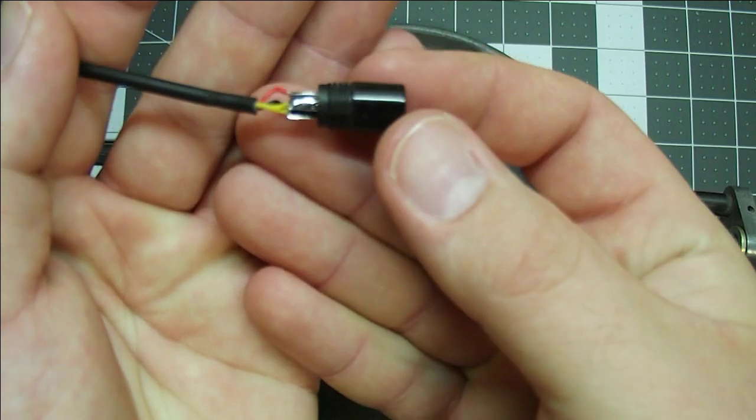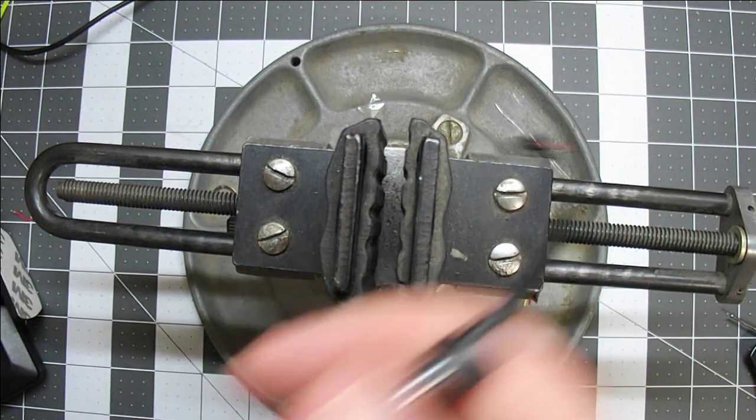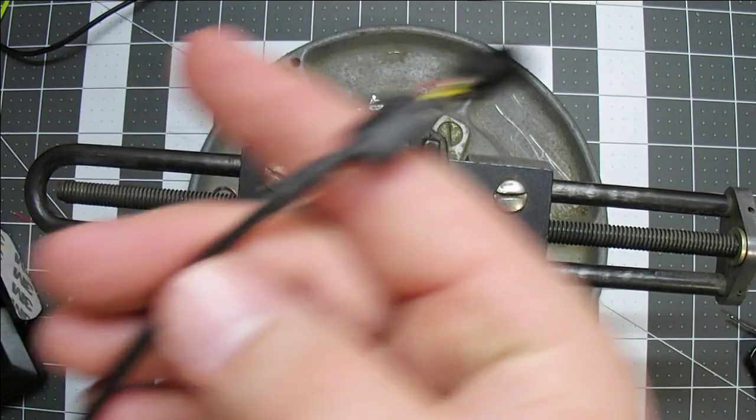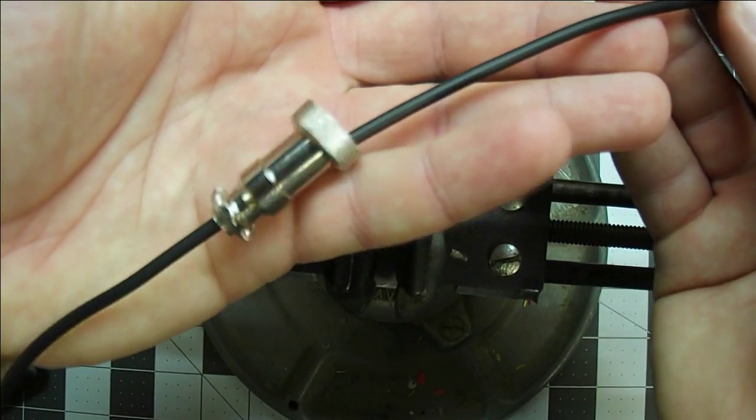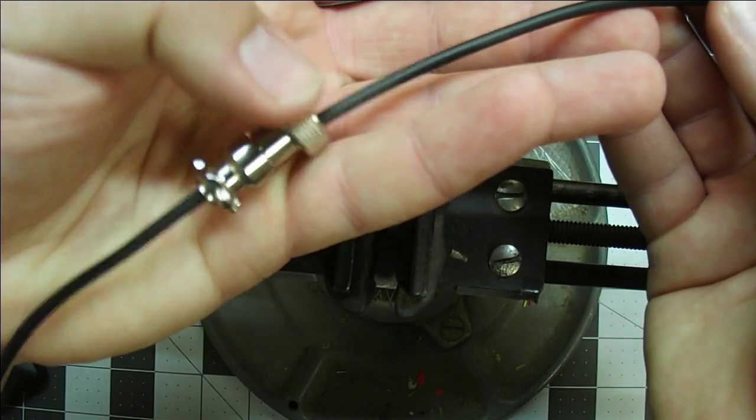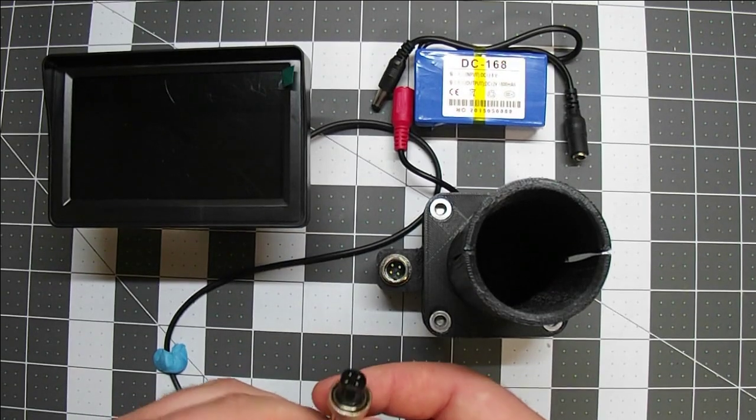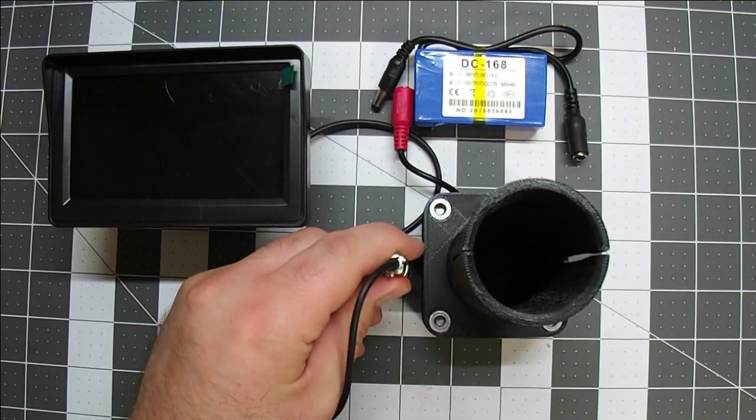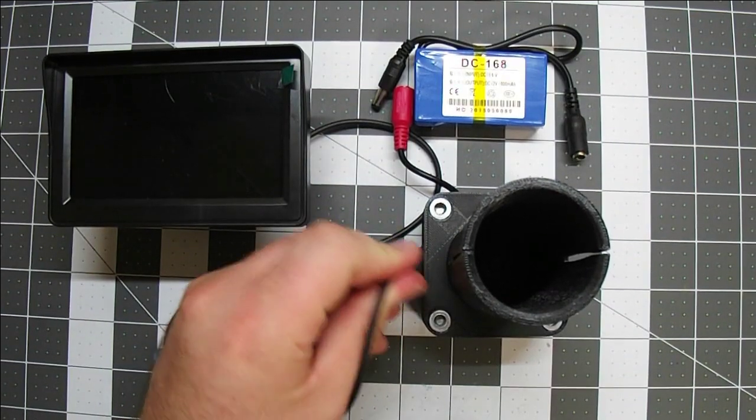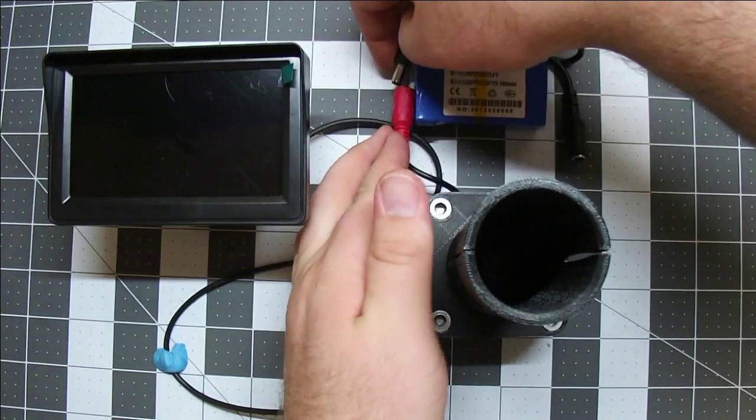And there it is all soldered together. I'll slide the heat shrink over it and then run this down, and then we'll test it out to see if we got all this soldered up right. Okay so here's the monitor and camera all wired up. Set to plug the monitor cable into the camera module and the power supply into the camera module and hit the power switch.